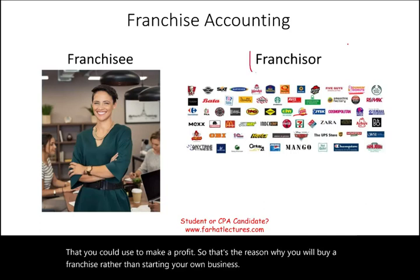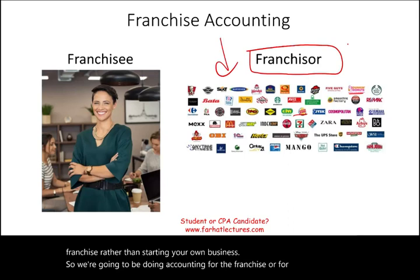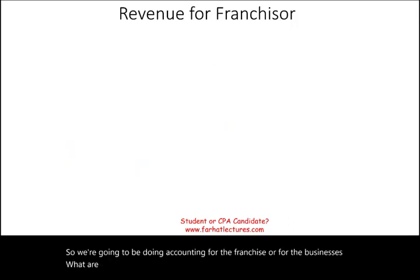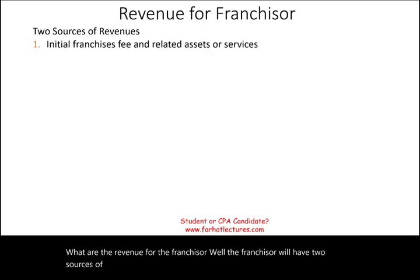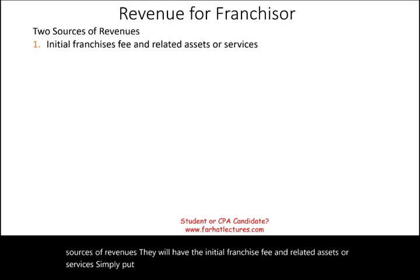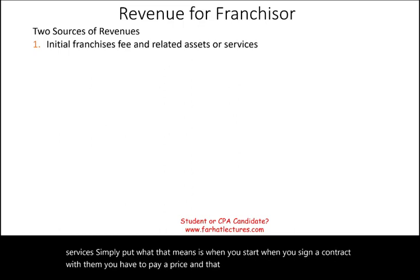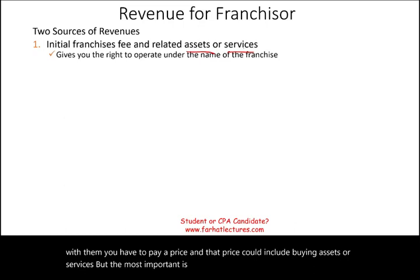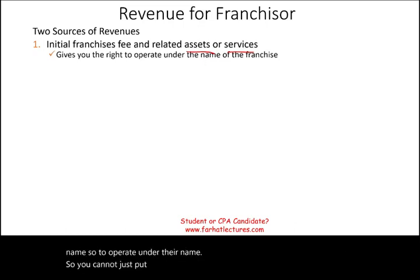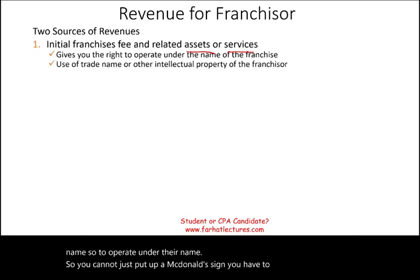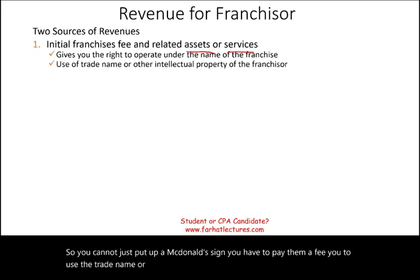We're going to be doing accounting for the franchisor. The franchisor will have two sources of revenues: the initial franchise fee and related assets or services. What that means is when you sign a contract with them, you have to pay a price. That price could include buying assets or services, but most importantly it gives you the right to use their name — to operate under their name. You cannot just put up a McDonald's sign; you have to pay a fee to use the trade name or other intellectual property of the franchisor.